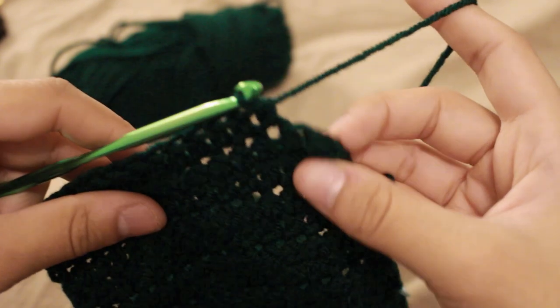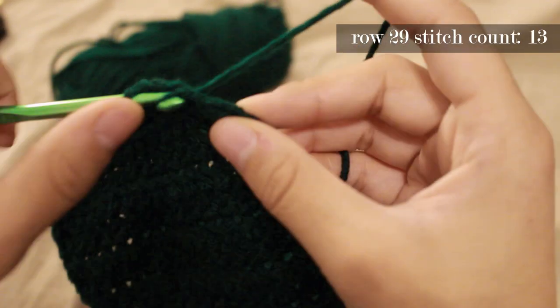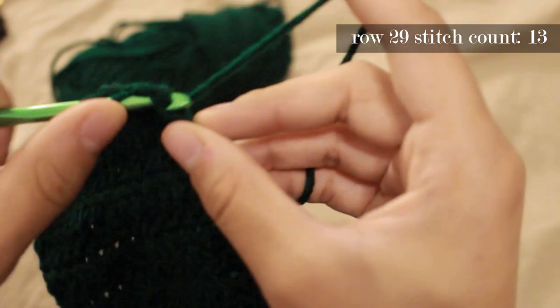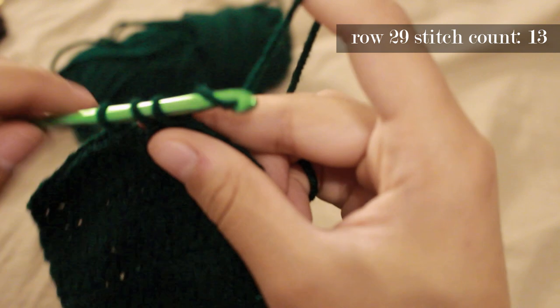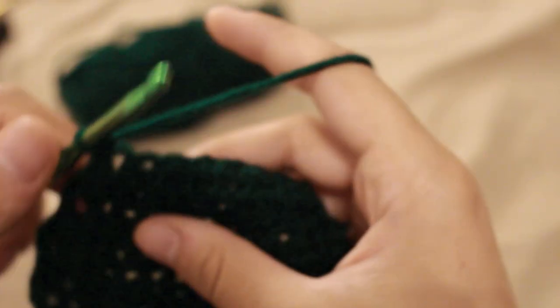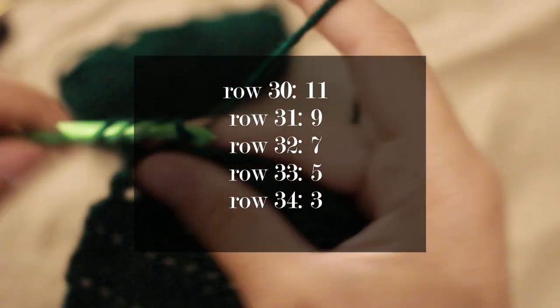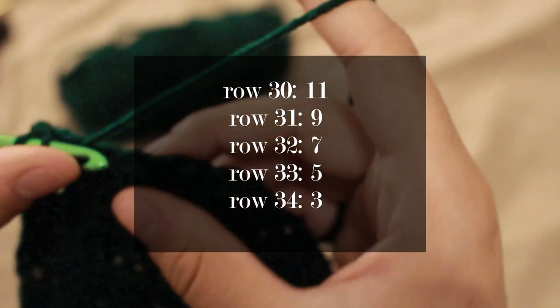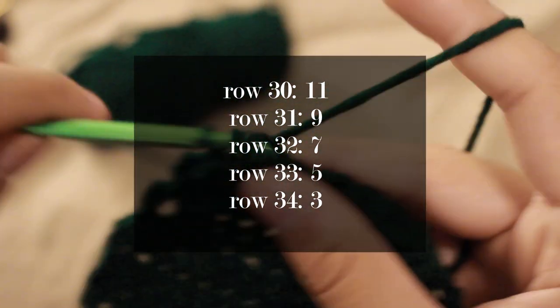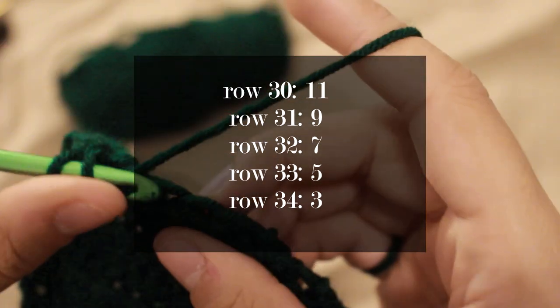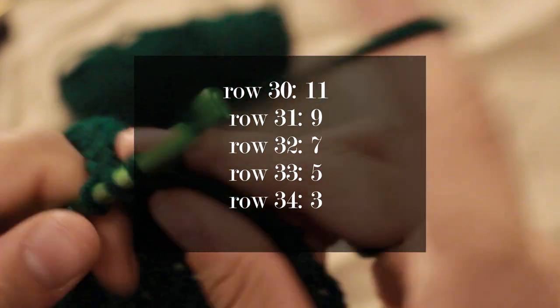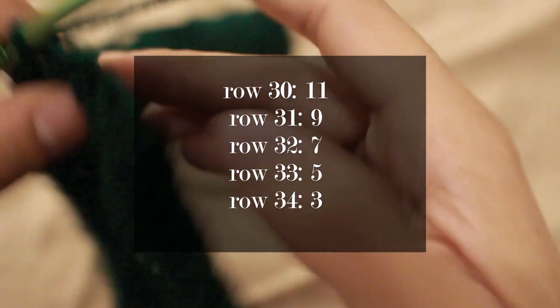In the second to last stitch, you're going to stick your hook through and bring up a loop. In the last stitch, you'll stick your hook through, bring up a loop, and have three strands on your hook, and then yarn over and pull all the way through. You'll continue this pattern for rows 30 through 34, continuing to decrease at both ends of the rows until you come up with three stitches left. I ended up on row 34 with three stitches.